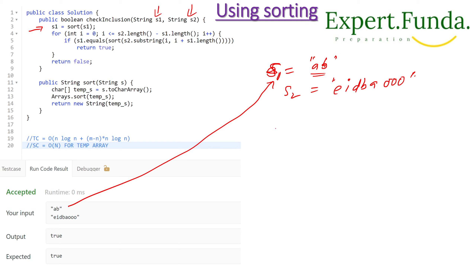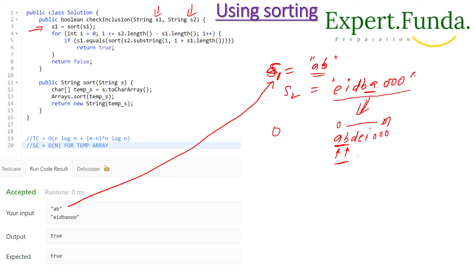We take a loop from 0 to only the relevant length — for example, if s2 length is 8 and s1 length is 2, we go from 0 to 6, which is 8 minus 2. We don't need to move all elements of s2; we start from the beginning and end at that boundary — only the window of two elements we need to check.